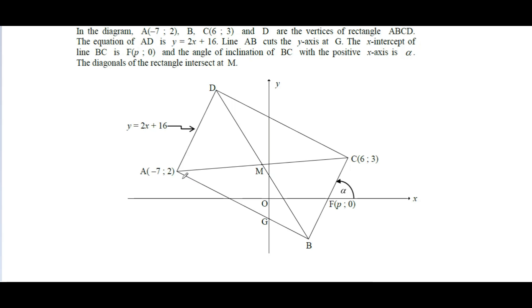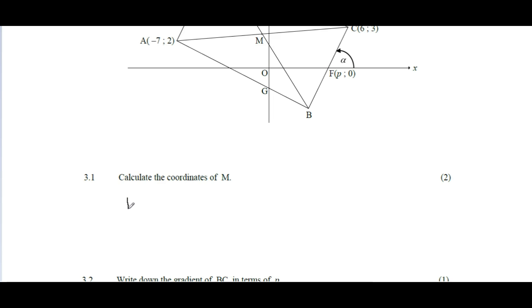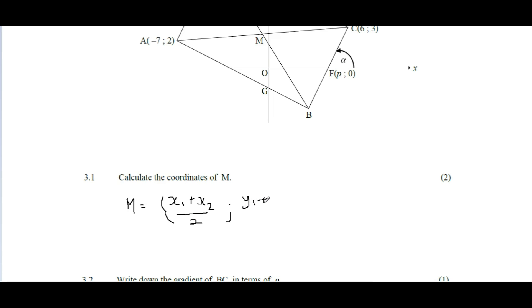We use the midpoint formula. To find the halfway point between two points, you add them and divide by two. So M = ((x1 + x2)/2, (y1 + y2)/2). The x and y calculations are kept separate so they don't mix with each other.